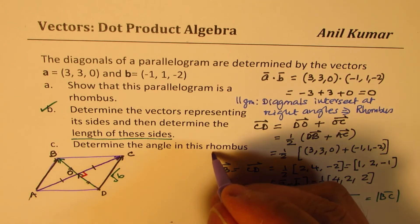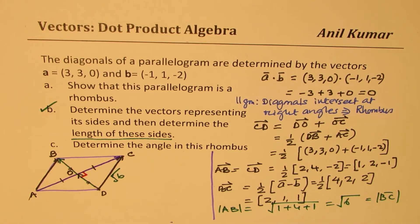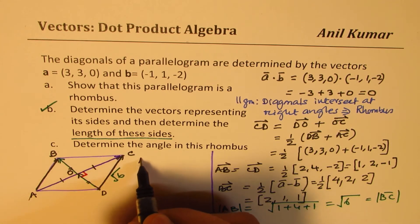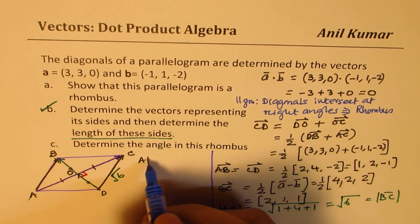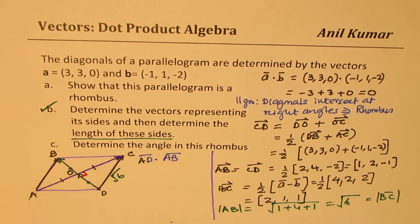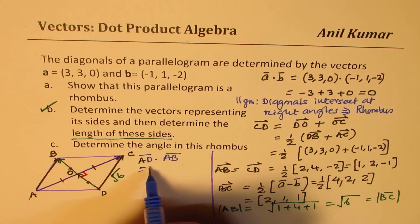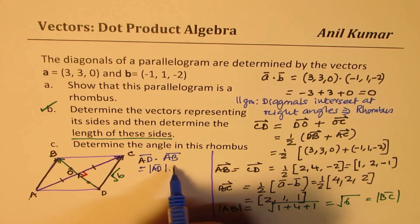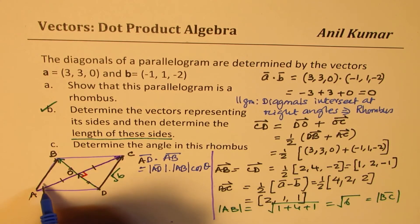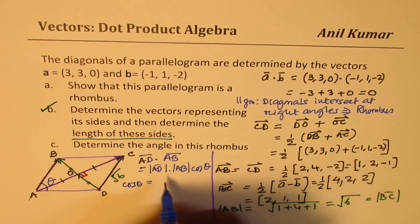Now let's find the angle in the rhombus. So to find the angle, we'll use these two vectors and do the dot product and find the angle. So the angle between AD, so we'll do, let's use a different ink, AD dot AB. Now AD is same as BC, so I'm writing AD, AD dot BC will be, we already have this here.